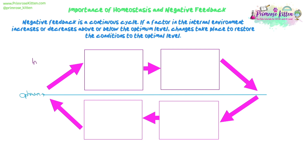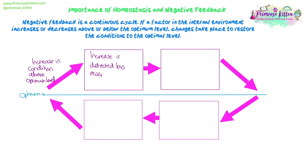Negative feedback is a continuous cycle in the body. If a factor in the internal environment increases or decreases above or below the optimum level, then changes will take place to restore conditions to that optimum. If a condition increases above the optimum, that increase is detected by receptors. It's the same mechanism we looked at with nerves: receptor, coordinator, effector, and response. The receptors send signals to the effector via a coordinator, and the effector brings about a change to decrease that condition back down towards the optimum.